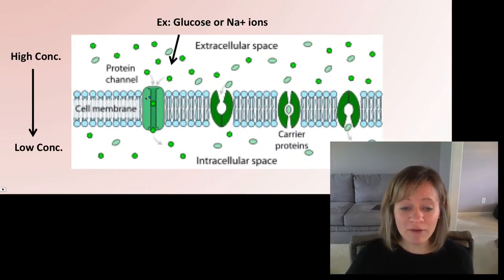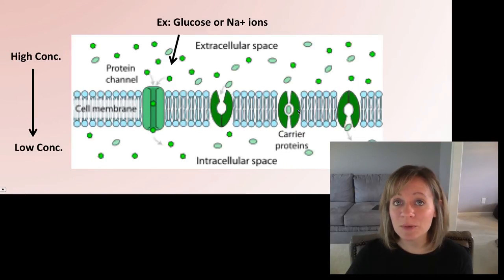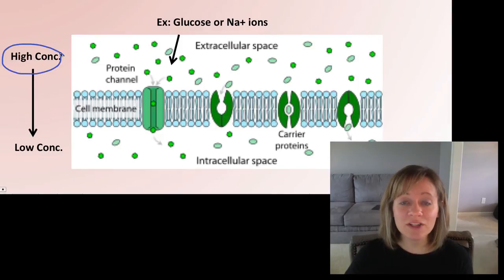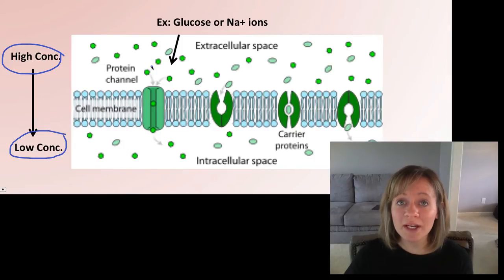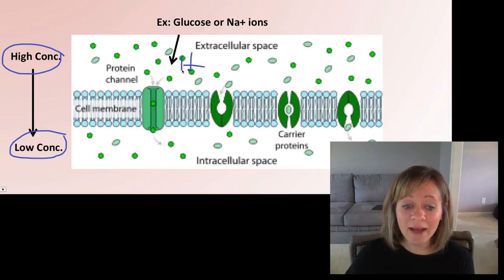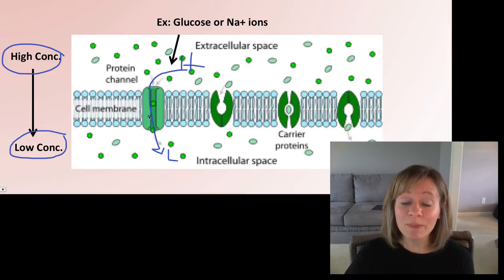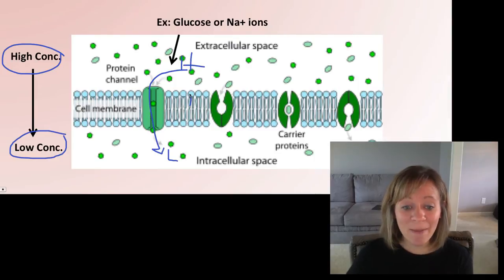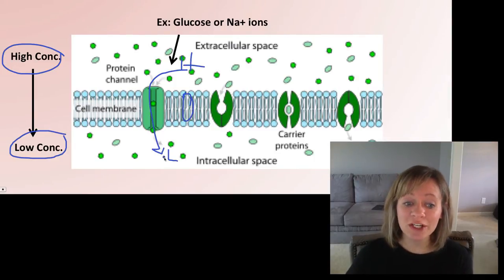Here in blue we have our phospholipid bilayer, and in green we have several examples of these helper proteins. We're still going from high to low — still down the molecule's concentration gradient. For example, a large molecule like glucose or a charged particle like a sodium ion still needs to get from high to low, but it does so through a helper protein channel that provides a polar, hydrophilic environment. It cannot pass through the hydrophobic environment of the bilayer, so it needs a channel. Still passive — that's facilitated diffusion.